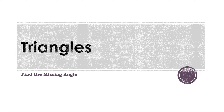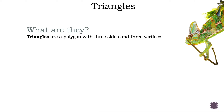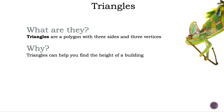Triangles. Find the missing angle. What are they? Triangles are a polygon with three sides and three vertices. Why? Triangles can help you find the height of a building.